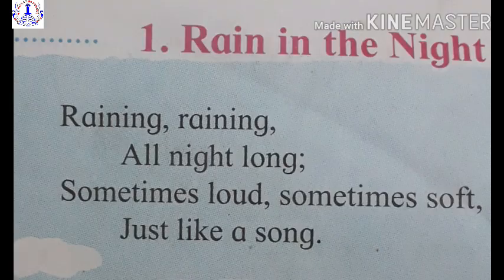Beginning with the explanation of the first stanza: 'Raining, raining, raining all night long. Sometimes loud, sometimes soft, just like a song.' It has been raining throughout the night. Sometimes the rain has been loud — that means having a very huge sound — and sometimes soft, meaning sometimes it is raining slowly. And this sound of loud and soft is just like a song. Hoping children, you are all clear with the first stanza.